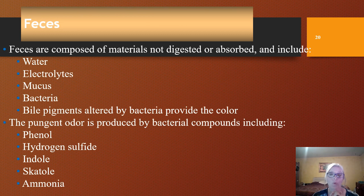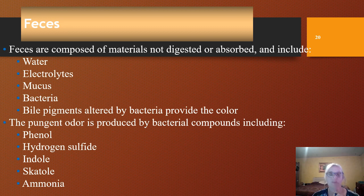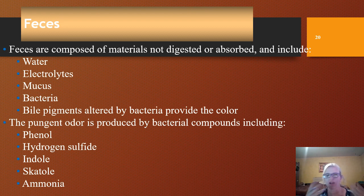Feces are made of everything that's not digested or absorbed: water, electrolytes, mucus, bacteria, and bile pigments that are altered by bacteria — which give poop its color — plus undigested material like cellulose that we can't digest. It can have a pungent odor, which is a byproduct of bacteria producing things like hydrogen sulfide, indole, and ammonia.